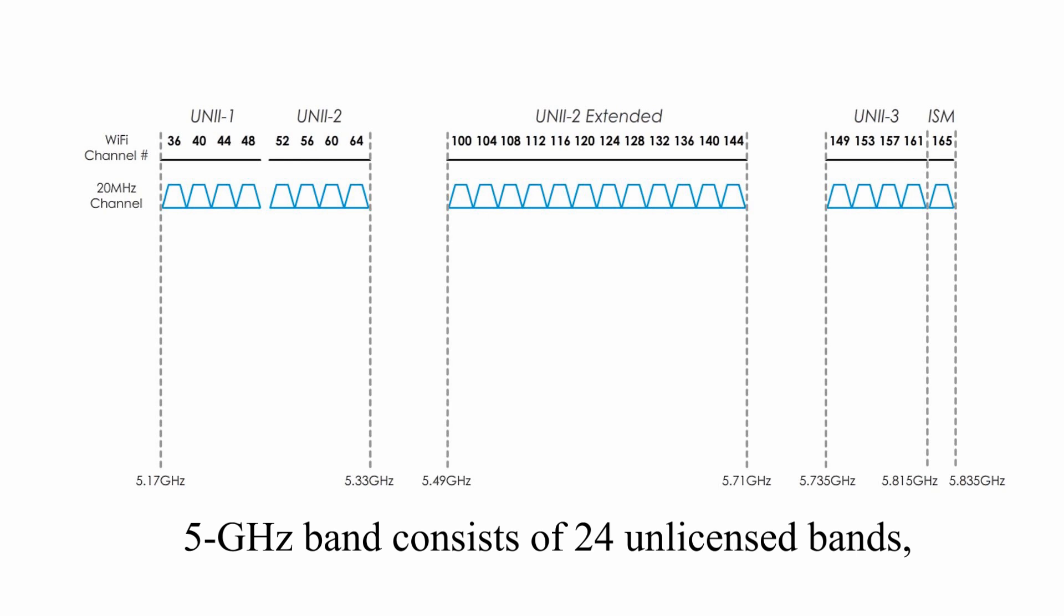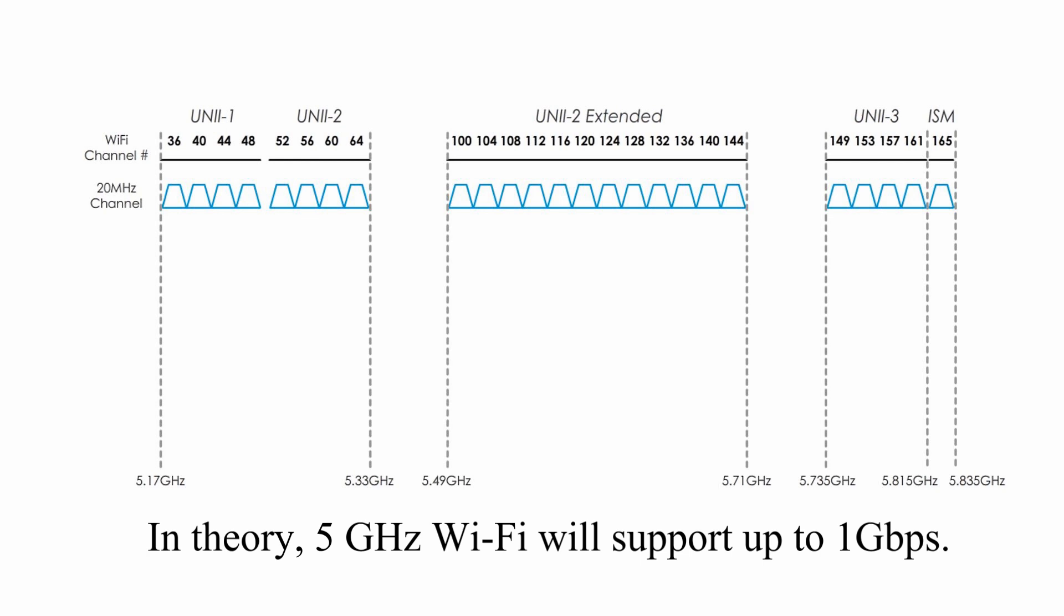5 GHz band consists of 24 unlicensed bands, each 20 MHz wide. There is no overlapping among 24 channels, thus the 5 GHz band is much less congested, and you will likely get more stable connections with high transfer data rate. In theory, 5 GHz Wi-Fi will support up to 1 Gbps, or even more.